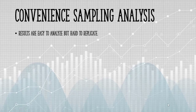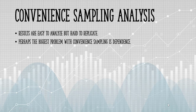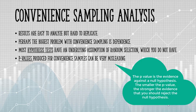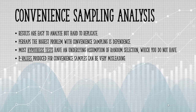Results from convenience samples are easy to analyse but hard to replicate. Perhaps the biggest problem with convenience sampling is dependence — dependent means the sample items are all connected to each other in some way. This dependency interferes with statistical analysis. Most hypothesis tests, like the t-test or chi-square test, have an underlying assumption of random selection, which you do not have. But perhaps most problematic is the fact that p-values produced for convenience samples can be very misleading.